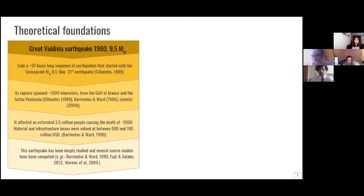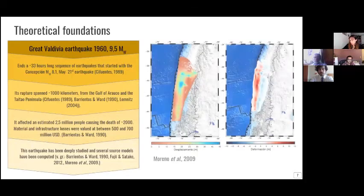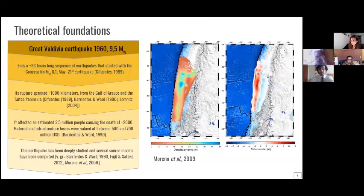What is important about this earthquake? I said that this was the biggest earthquake in recorded history. For this reason, this earthquake has been deeply studied and several source models have been computed. Starting with Barrientos and Ward in 1990, Fujii and Satake in 2012, which uses tsunami and mareograph data, and Moreno et al. in 2009. This is an example of the rupture model from Moreno et al. in 2009. This is the slip model and this is the deformation model. You can see that the slip reached up to 45 meters and the deformation went up to 12 meters.